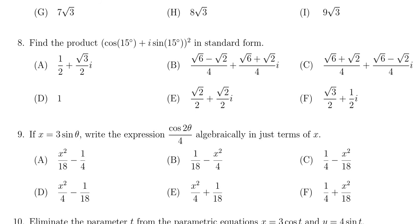In this video, we provide the solution to question number 8 from the practice final exam for Math 1060. We're asked to find the product (cos(15°) + i sin(15°))² in standard form, so it should look like a + bi, a real part plus an imaginary part.